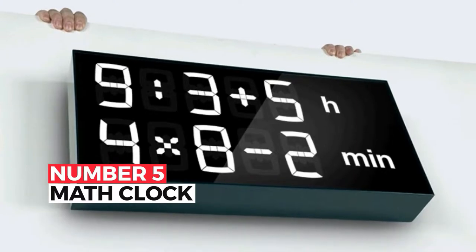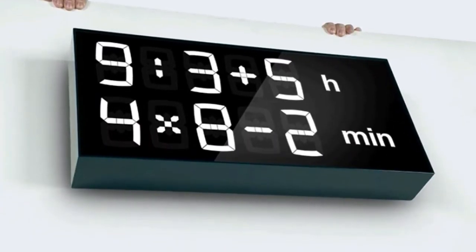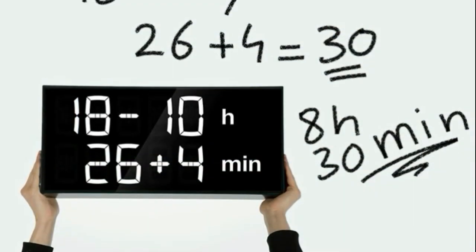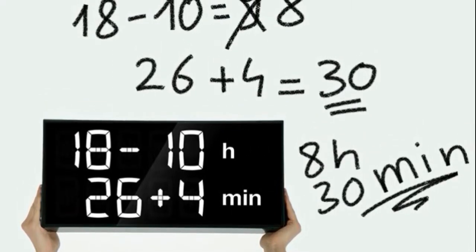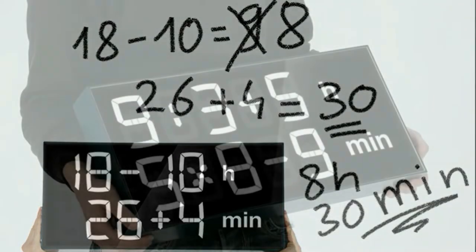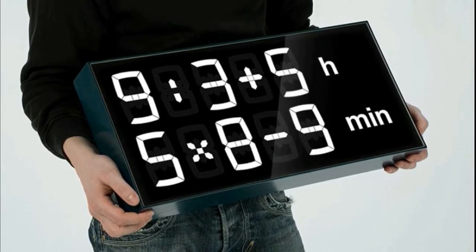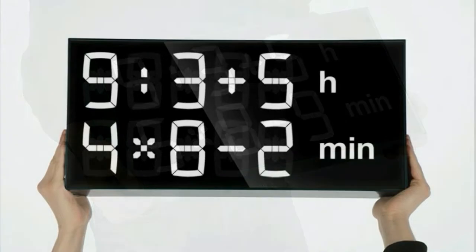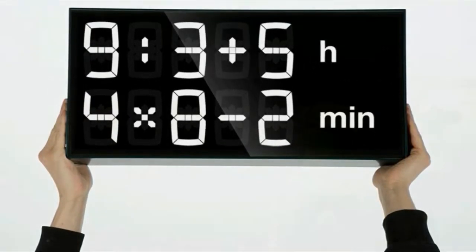Number 5. Math Clock. What time is it? You'll have to do a bit of work to figure out what time it is when it comes to this clock. By work, we mean doing math. The Albert clock displays math equations instead of the actual time. There's one equation for the hour of the day and another one for the minutes. So, to tell the time, you'll have to do the math first. For instance, if the clock displays 8 plus 3 hours and 25 minus 3 minutes, that means it's 11:22. The designer made the clock to help kids brush up on their math skills. Would you like a clock like this in your home?